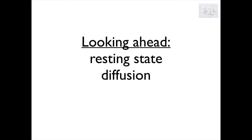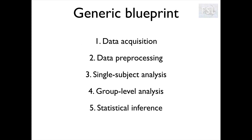Now it's time to briefly move forward and see what's next in the course. We have two more big topics to cover: resting state fMRI and diffusion MRI. What I'm going to do now is to quickly go back to the generic blueprint and highlight some key points that will change and some others that will stay the same for these modalities, so that when they are covered in the specific sessions, you will have an idea of where they fit in the big picture. Don't worry too much if some terms or concepts won't make sense to you now — hopefully they will by the end of the course.